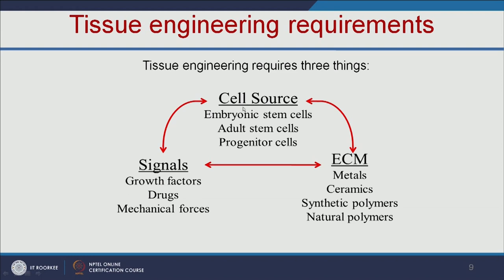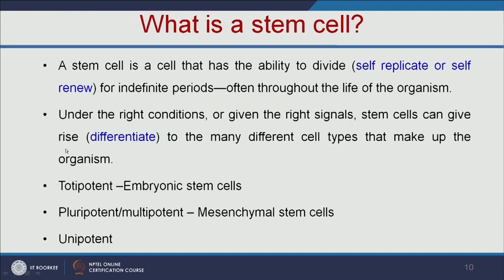The cell source can be embryonic stem cells or adult stem cells. The extracellular matrix scaffold can be metal, ceramics, synthetic polymers, or natural polymers, depending on the tissue or organ you want to grow — for example, metal for bone replacement. Signals or growth factors decide what kind of cells will differentiate. Mechanical force also plays a major role in cell differentiation for some tissues.